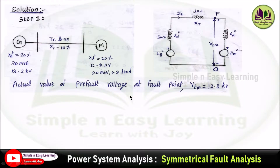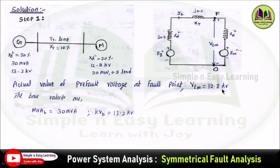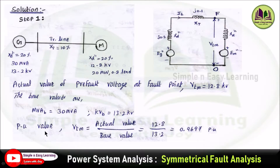The actual value of pre-fault voltage at the fault point equals 12.8 kV, so before the fault, this terminal voltage equals 12.8 kV. The base values are MVA_B = 30 MVA and kV_B = 13.2 kV. If base values are not given, we consider the generator ratings as base values. The per-unit value of V_TM equals actual value divided by base value: 12.8 kV divided by 13.2 kV equals 0.9697 per unit.